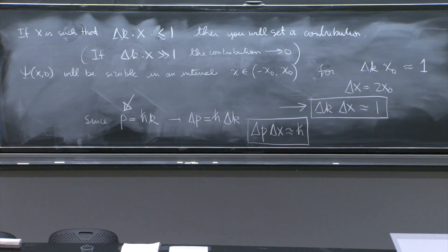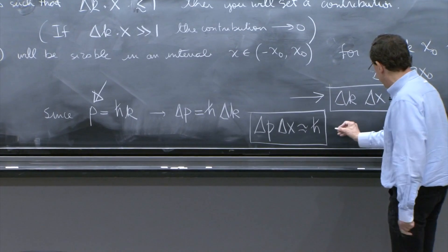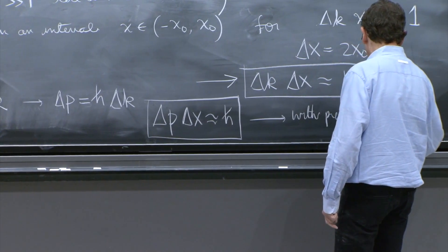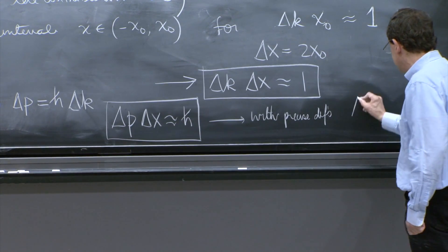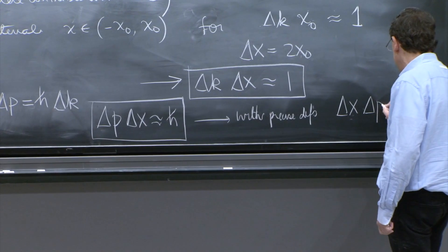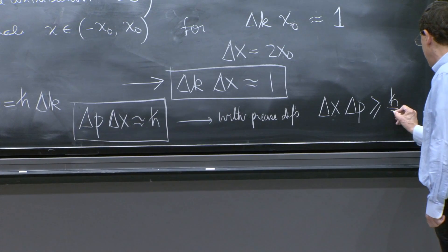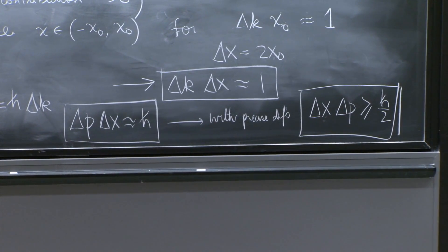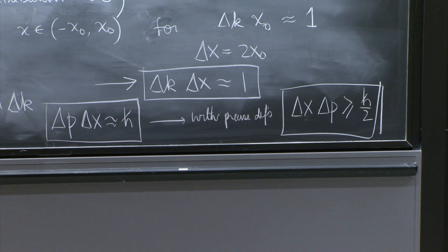Now, we will make the definitions of delta p and delta x precise and rigorous with precise definitions. Then there is a precise result, which is very neat, which is that delta x times delta p is always greater than or equal than ℏ over 2. So this is really exact. But for that, we need to define precisely what we mean by uncertainties, which we will do soon, but not today.